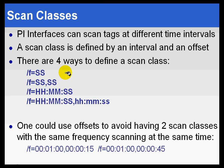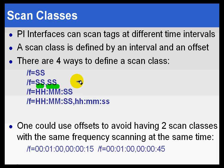There are four different ways to define a scan class. You can simply specify the number of seconds for scanning — specifying 05 or 5 would mean five-second scanning with no particular offset. If you put the number of seconds followed by a comma followed by an offset in seconds, then we will schedule scanning to go exactly at that offset from the zero mark on the 60-second clock.